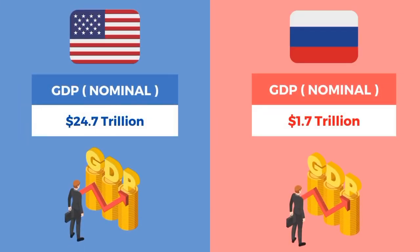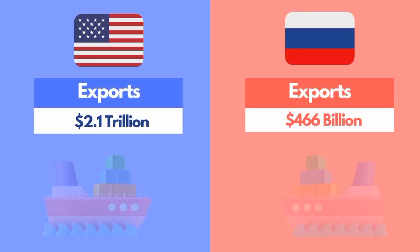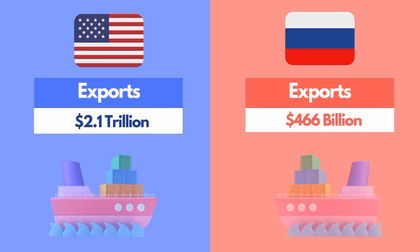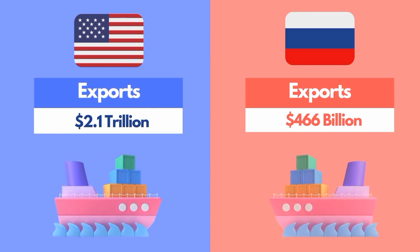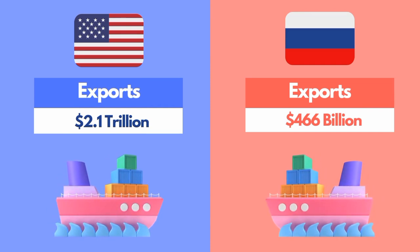The GDP nominal of the US is 24.7 trillion dollars and the GDP nominal of Russia is 1.7 trillion dollars. Total exports of the US are 2.1 trillion dollars and total exports of Russia are 466 billion dollars.